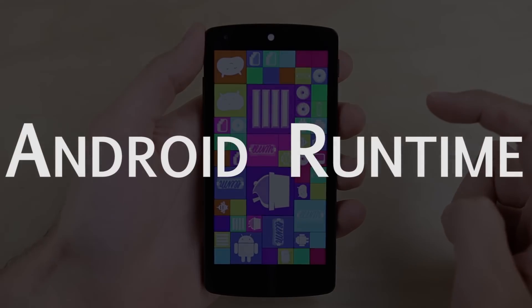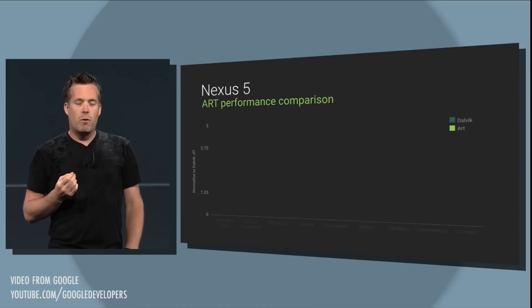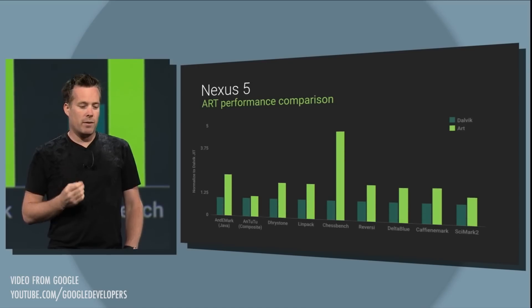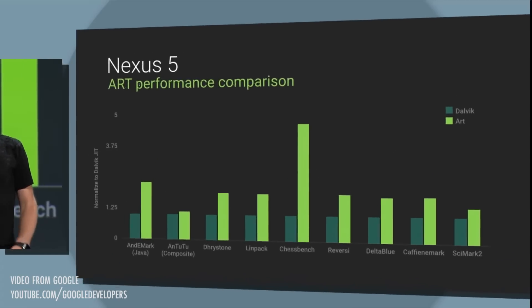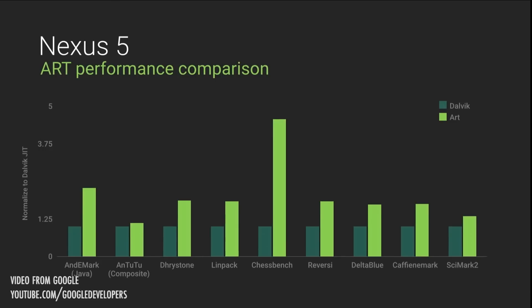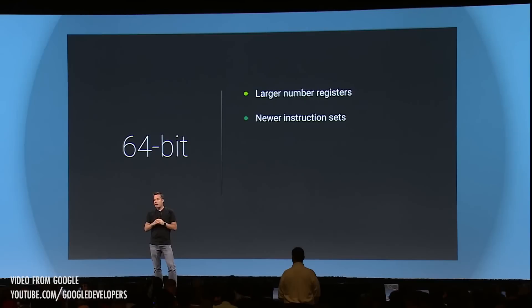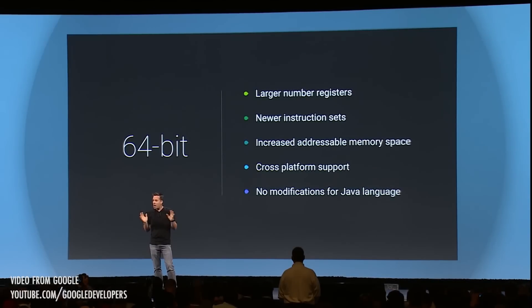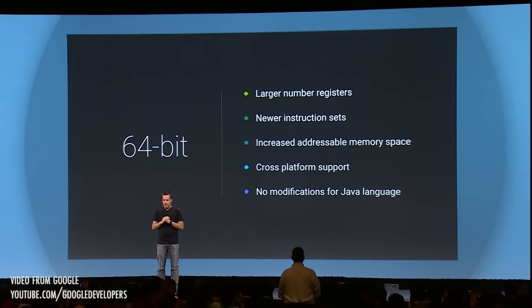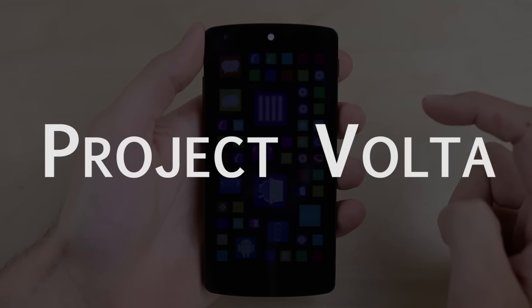Number 4: Android Runtime. I already did a video covering what ART is and why it's so important — I'll link it in the description below. But all you need to know is that with ART, your phone will be able to run apps faster and more efficiently. ART also brings support for 64-bit CPUs, so don't be surprised if we start seeing 64-bit Android phones by the end of this year.